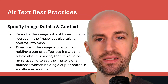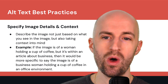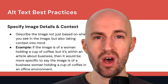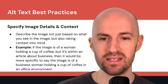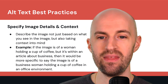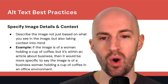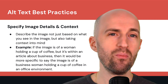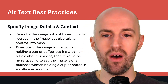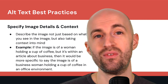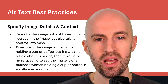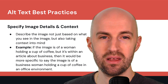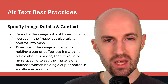So, alt text best practices. Firstly, be specific about the image details and the context — not just what you see in the image, but taking the context of the page into account. For example, if the image is of a woman holding a cup of coffee but it's within an article about business, it would be more specific to say the image is of a businesswoman holding a cup of coffee in an office environment. Same image, but more context and more relevant to the topic, page, and keyword.